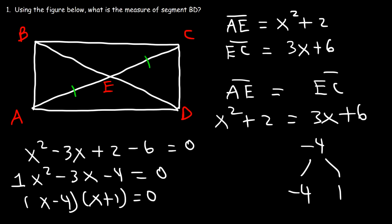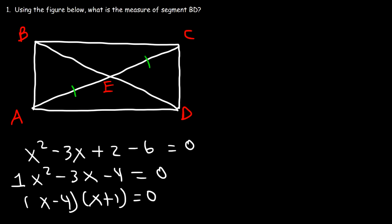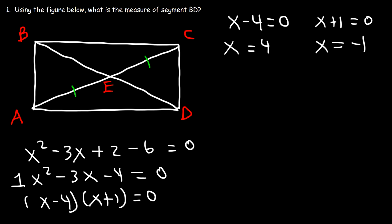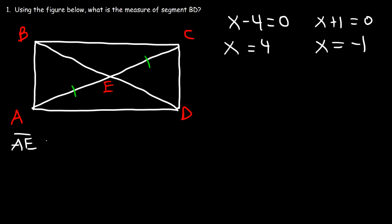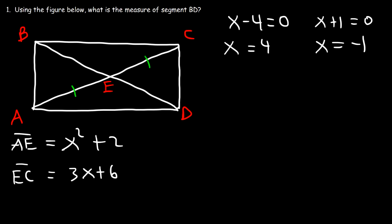Setting each factor equal to zero gives x equals 4 or x equals negative 1. Since AE is x squared plus 2, it will be positive for either value. For EC, which is 3x plus 6, plugging in negative 1 gives negative 3 plus 6, which is still positive. So both answers are valid.